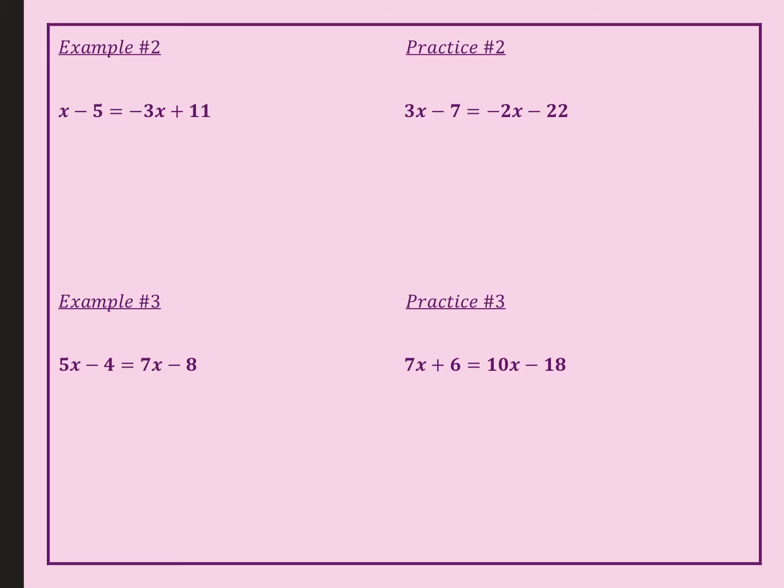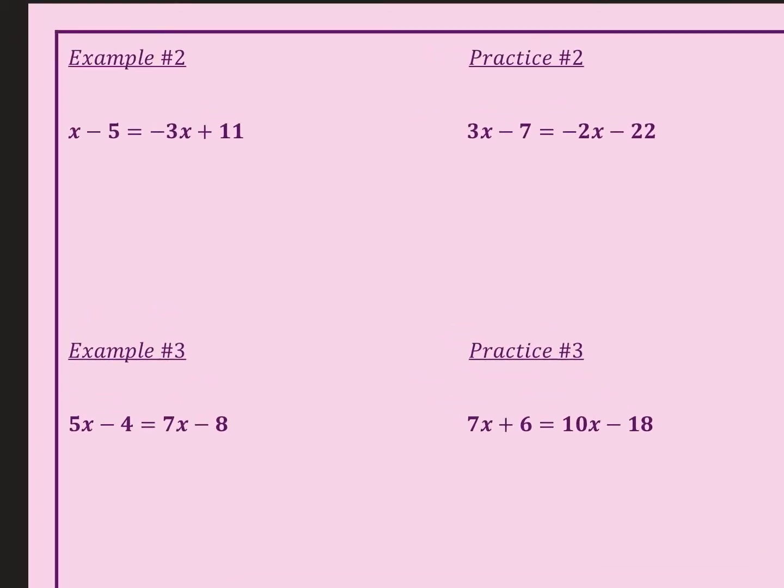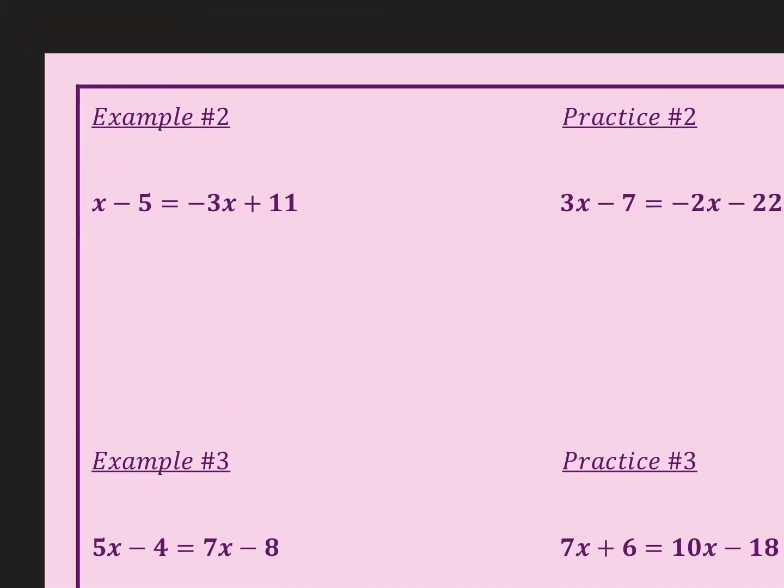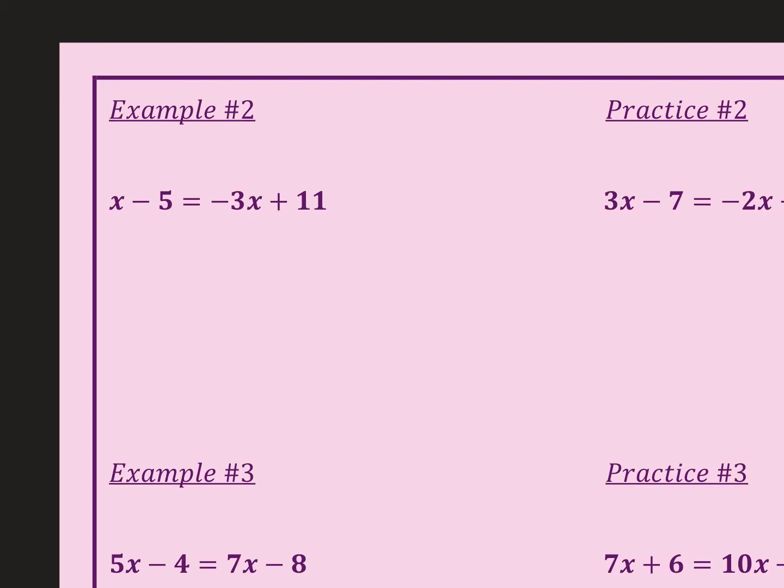We're going to do the same thing again. We're going to start with example number two. First thing is to look, can we combine any terms on this side? Nope. Can we combine any on this side? Nope. So now I want to get rid of this -3x, because I want it to come to this side.